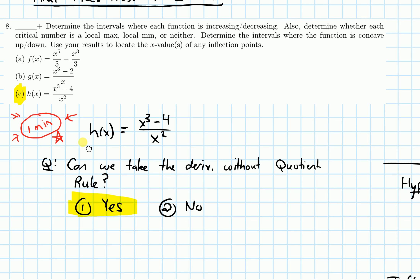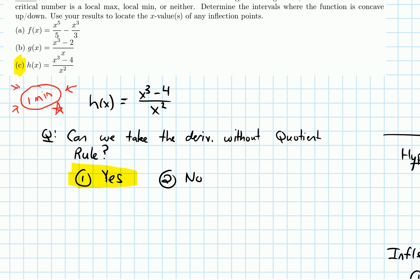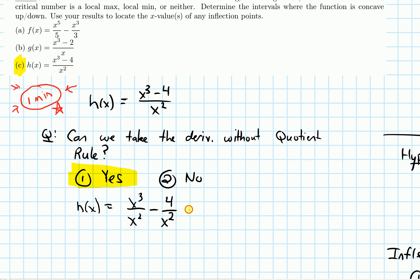So what does that look like? For my function h of x, even though this is a fraction, I can split this fraction up as x cubed over x squared and then minus four over x squared. I can split it into two fractions and then simplify them. The first fraction becomes x. The next one, I can write as minus four x to the negative two, bringing up that x squared term.